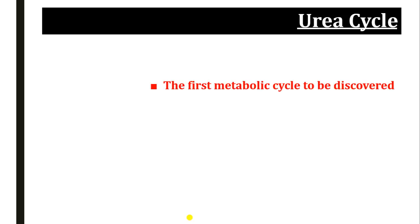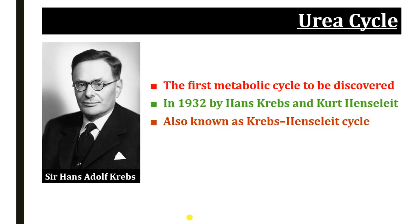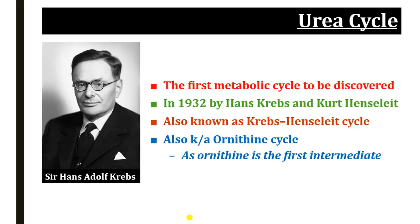The urea cycle was the first metabolic pathway to be discovered by Krebs and Henseleit in 1932, and because of this it is also known as the Krebs-Henseleit cycle. In the urea cycle, the first intermediate of this pathway is ornithine, which is why it is also known as the ornithine cycle. So the urea cycle is also known as the Krebs-Henseleit cycle or the ornithine cycle.